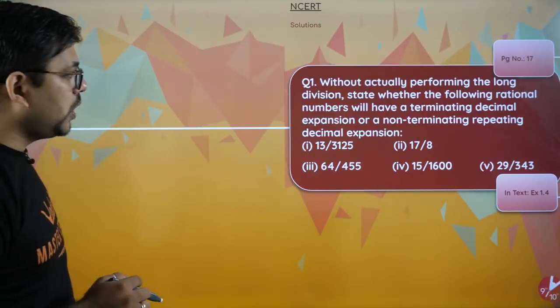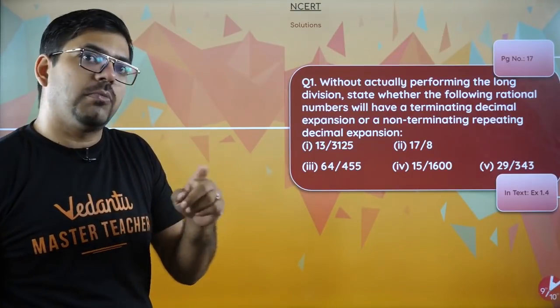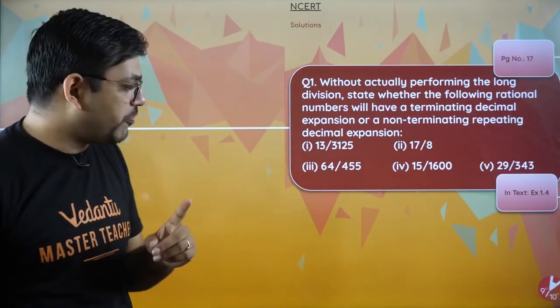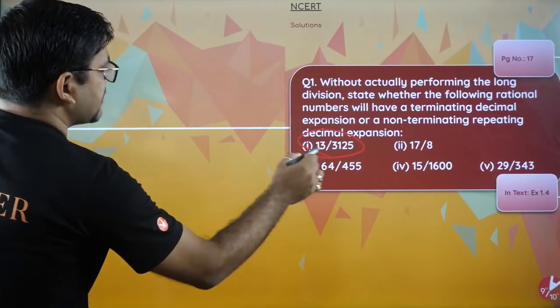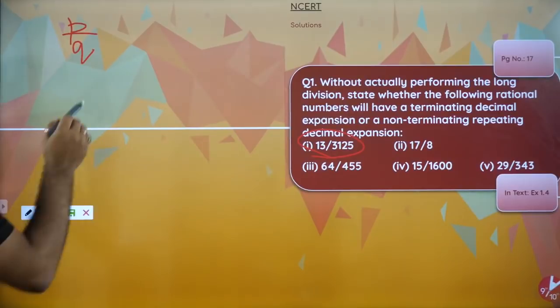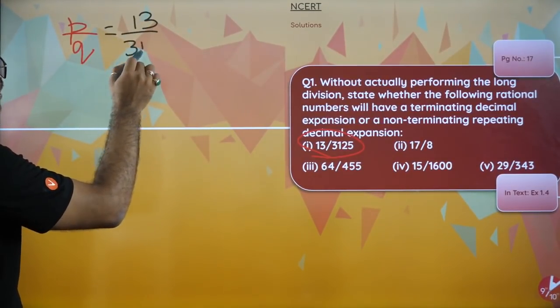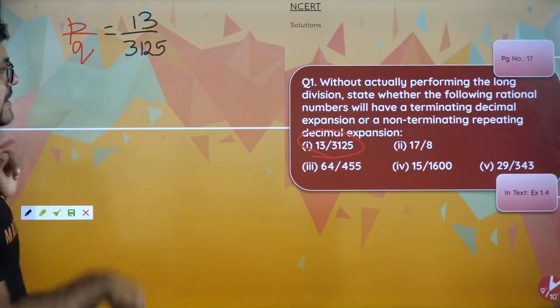For checking it out, we know that we have to express all the fractions in the form of p by q. If this is the fraction, in the form of p by q you have 13 upon 3125. This will not get cancelled further.